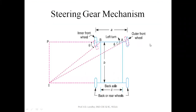In this steering gear mechanism, if you see, this is the layout of the four-wheel vehicle. Here AB is the front axle and the rear axle is at the back. These are the back wheels and the front wheels. Here A is the track width and B is the total length — the center distance between the front and the rear wheel.